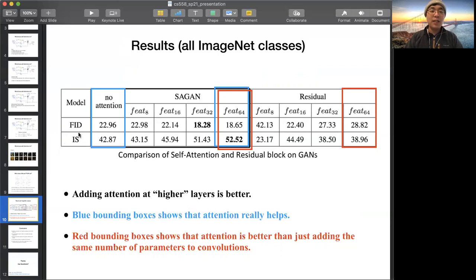The first is the FID. The second is inception scores. For the FID, you want to measure the quality of the image, the lower the better. For the inception score, it measures the clarity and the diversity of the image, the higher the better. In the blue bounding box, it shows the attention really helps. In the red bounding box, it shows the attention is better than just adding the same number of parameters to convolutional.